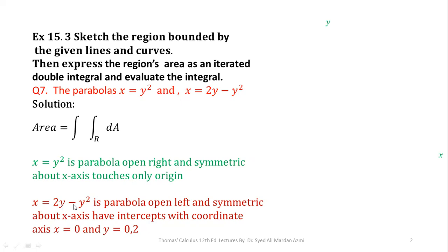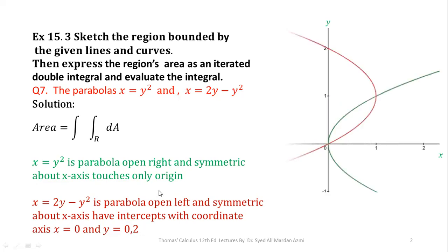This parabola intersects the coordinate axes at x = 0, y = 0, and y = 2. If you put y = 0 in the equation, you get x = 0. If you put x = 0, you get y = 0 and y = 2. We have plotted this parabola in red — x = 2y − y². These are the points of intersection, and this is our required region of integration.